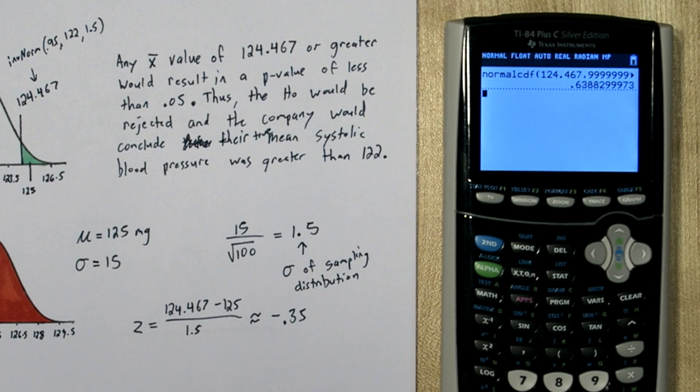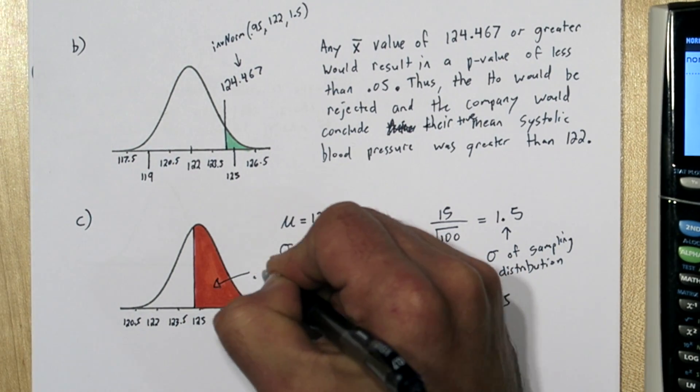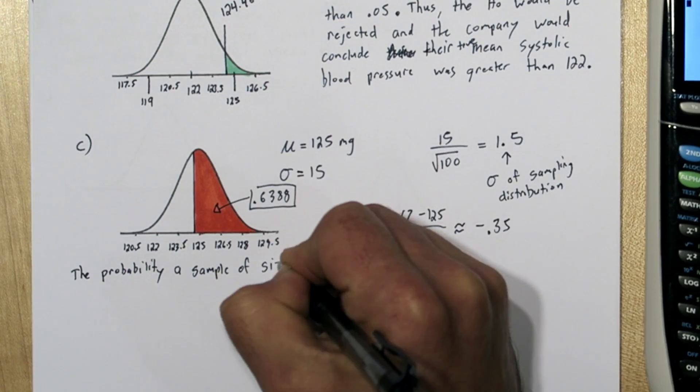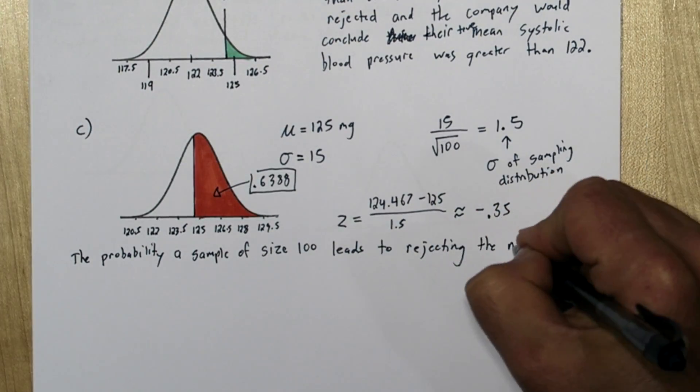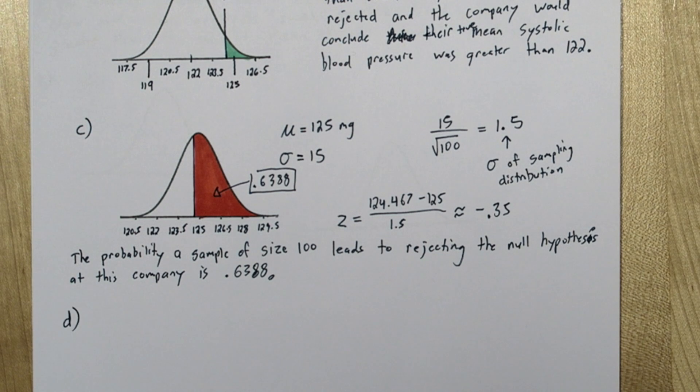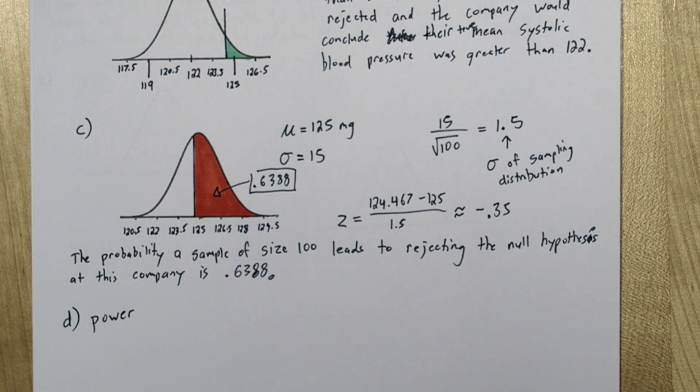And there we have it. That area of the shaded region is 0.6388 approximately. So we'll say the probability a sample of size 100 leads to rejecting the null hypothesis at this company is 0.6388. That calculation we just did is a power calculation. So the answer to part D is power.